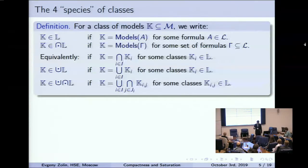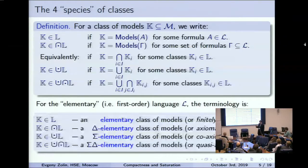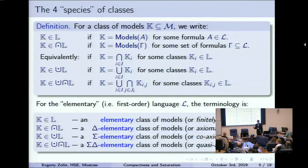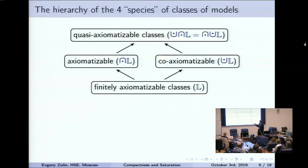This is explained on the next slide. But first I would like to remind the terminology from first-order or elementary languages. These four options are called elementary classes, delta-elementary classes, sigma-elementary, and sigma-delta-elementary. Delta-elementary classes are classes of first-order structures definable by a set of closed first-order formulas. All remaining species collapse to just four.